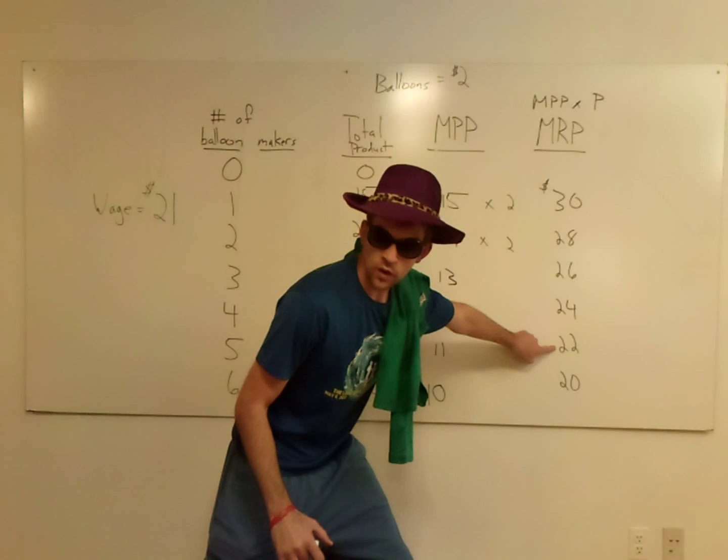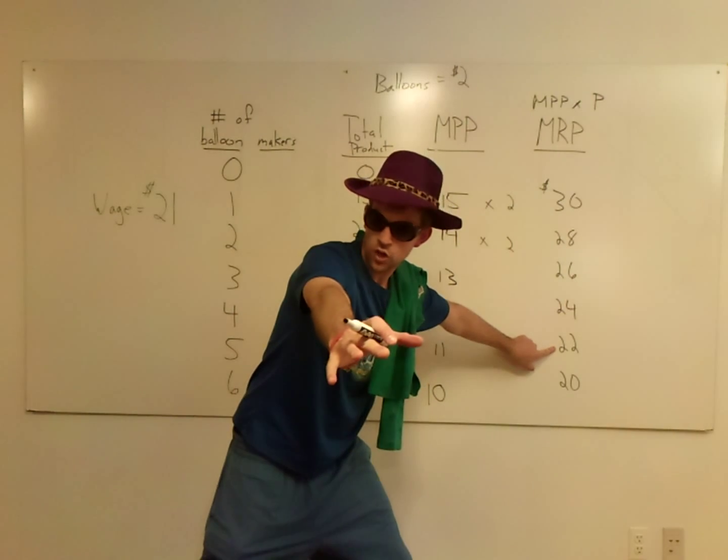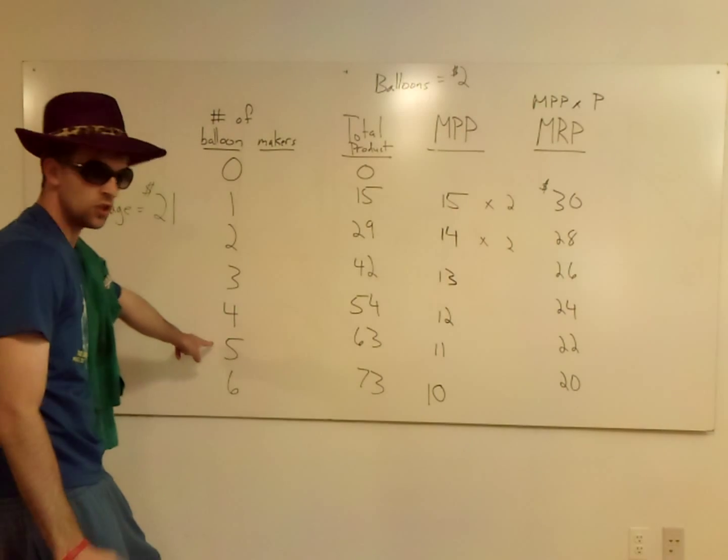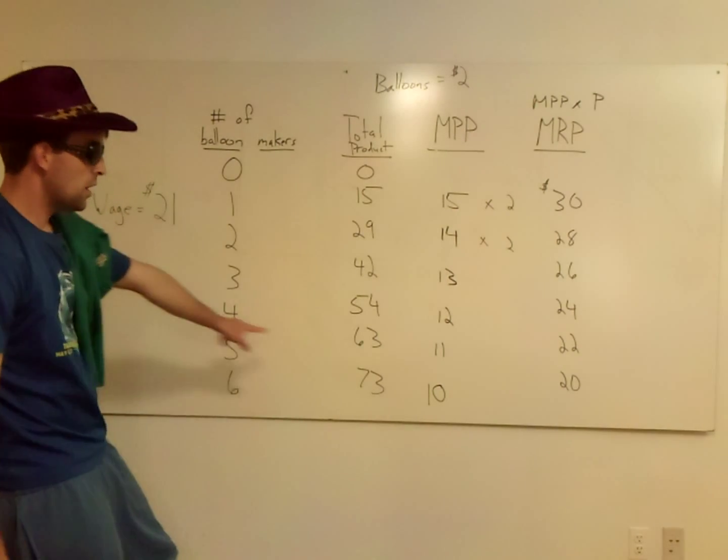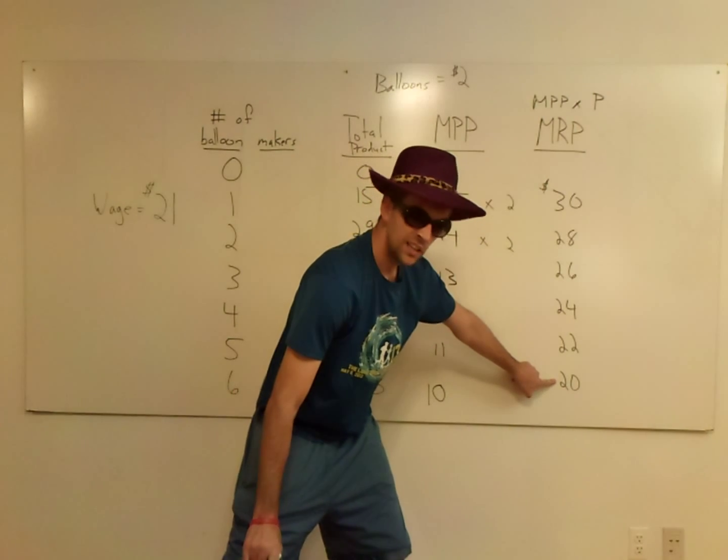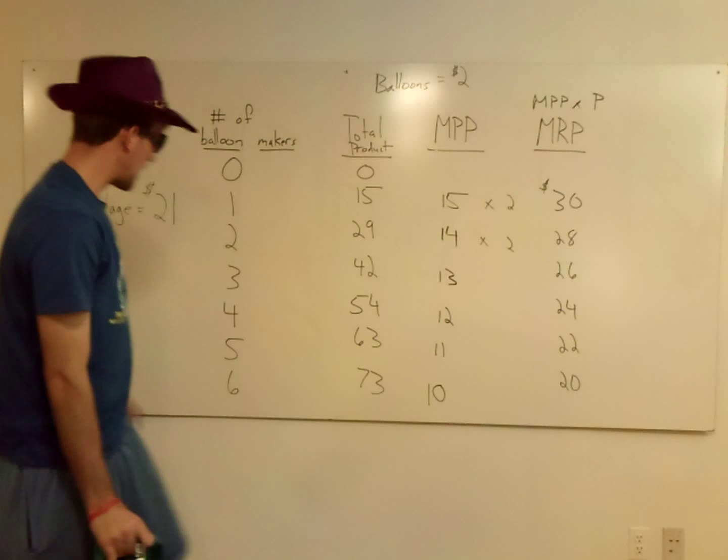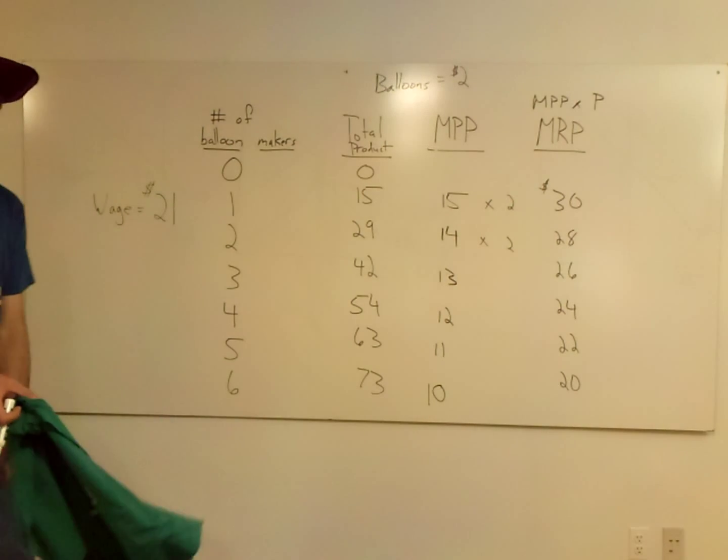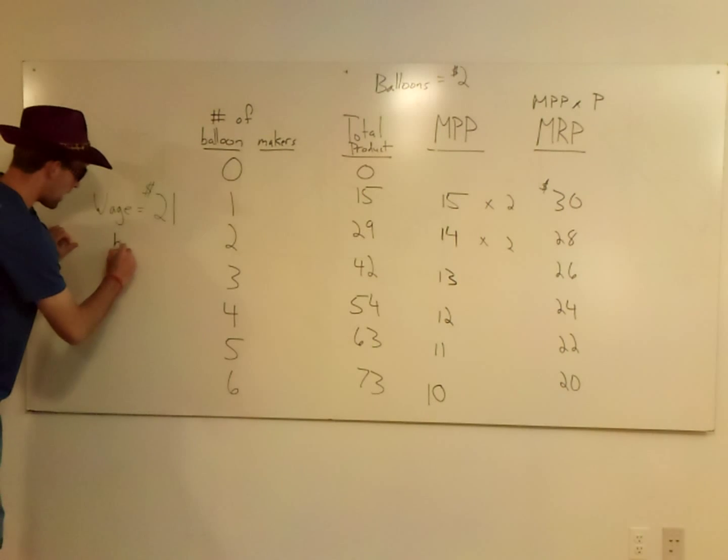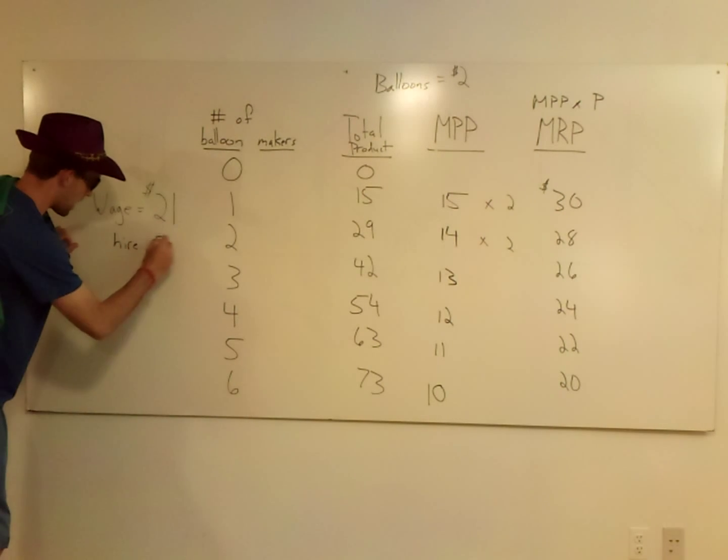And all the way down, you get to $22, will you hire $22? $22 the fifth worker's going to bring in? Sure, that's bigger than $21. But here, when I get to the last one, $20? He's only going to bring in $20, but I got to pay him $21? No, no, no, no, no. So if the wage is $21, we'll hire five workers.